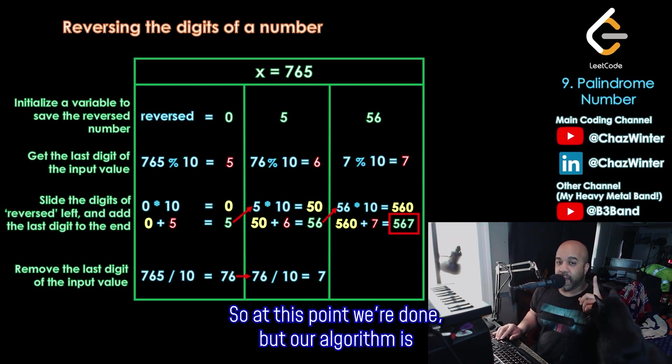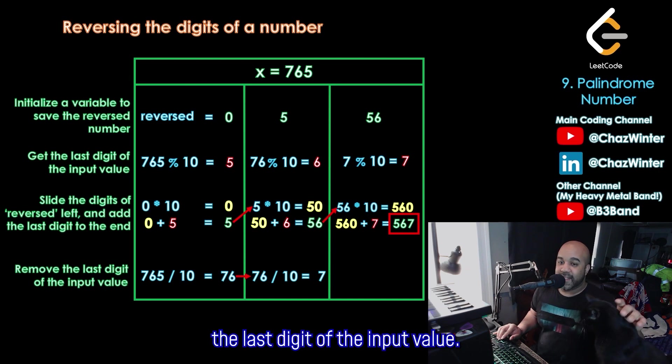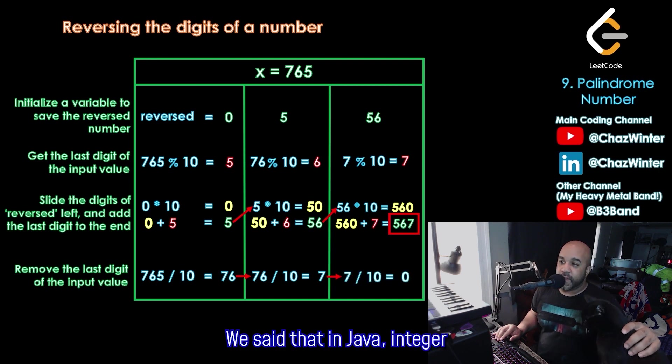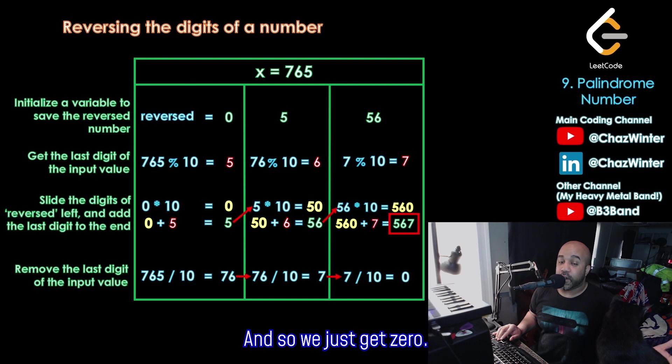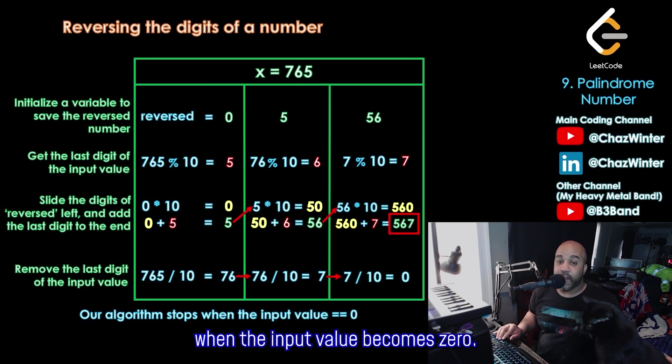So at this point, we're done, but our algorithm is going to keep going. So let's see what happens. So I need to remove the last digit of the input value. Right now the input value is 7. So I'll do 7 divided by 10. We said that in Java, integer division discards the remainder. So 7 divided by 10 would be 0 remainder 7. Discard that remainder. And so we just get 0.